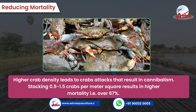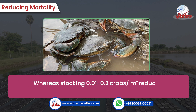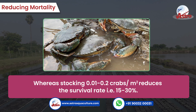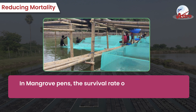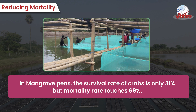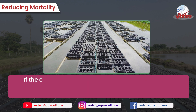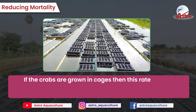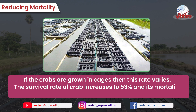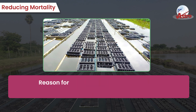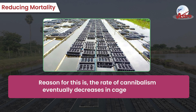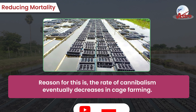Stocking at 0.01 to 0.2 crabs per square meter reduces the survival rate to only 15 to 30 percent in mangrove pens, where the survival rate is 31 percent and mortality touches 69 percent. In cage farming, the survival rate increases to 53 percent and mortality reduces, because the rate of cannibalism decreases.